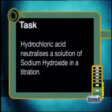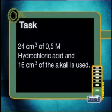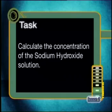Are you ready to try a titration question of your own? Hydrochloric acid neutralizes a solution of sodium hydroxide in a titration. 24 cm³ of 0.5 molar hydrochloric acid and 16 cm³ of the alkali is used. Calculate the concentration of sodium hydroxide solution. In our next lesson, we will examine another way of finding the end point of a titration that does not depend on using an indicator. Until we meet again, goodbye.